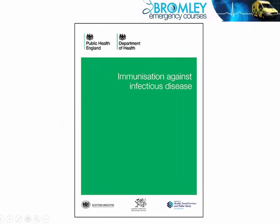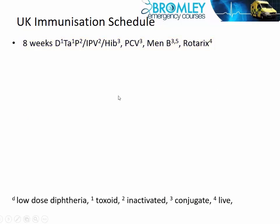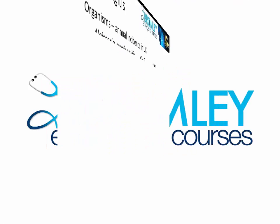In case you ever want to find out about current advice on immunizations, this is what's known as the green book. Poor little babies at two months of age — about eight weeks — they get this lot. After that, the curriculum gets into specific pathogen groups.